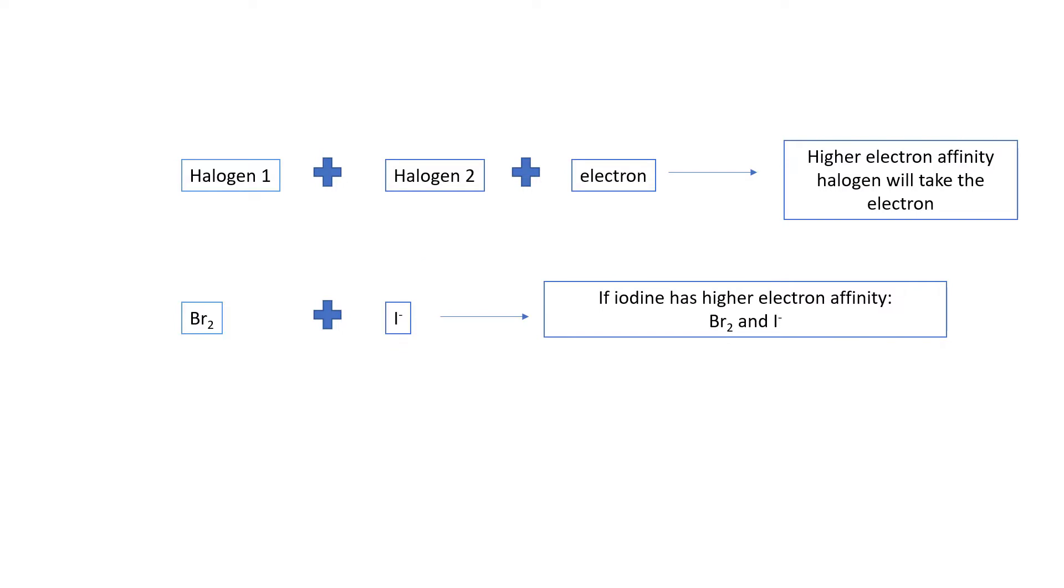If iodine has the higher electron affinity, if it wants the electron more, it will keep the electron and we will end up with exactly what we started with: bromine molecules and iodide ions.